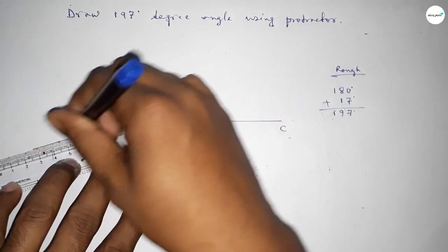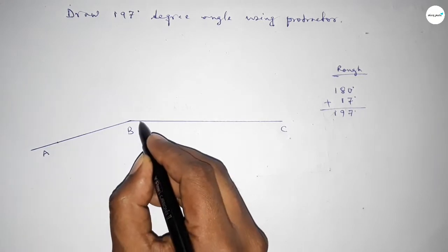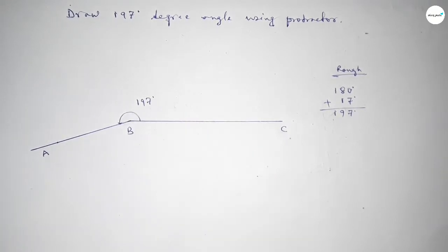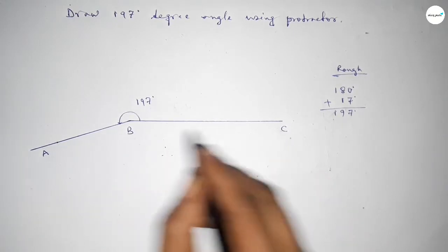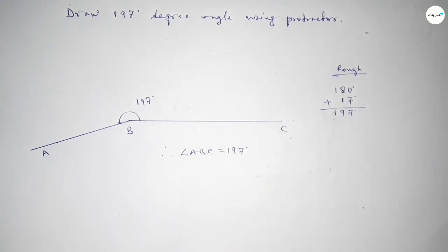So therefore angle ABC up to this, so angle ABC equal to 197 degree angle. That's all, thanks for watching, please share.